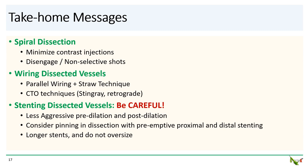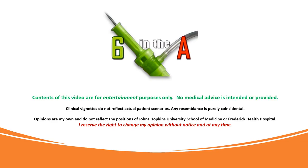Take-home messages: Once you're faced with a spiral dissection, the first thing to do is minimize contrast injections — you don't want them to extend the dissection plane. If you need to take shots, it is often better to disengage and take non-selective shots. Wiring dissected vessels is extremely challenging; we discussed the parallel wiring and straw technique as well as CTO techniques that may help. Remember that stenting dissected vessels is not the same as stenting normal vessels — be less aggressive with pre-dilation and post-dilation, consider pinning in the dissection with stents proximal and distal in healthy tissue, use much longer stents than you normally would, and make sure you don't oversize the stents. Thank you for watching.